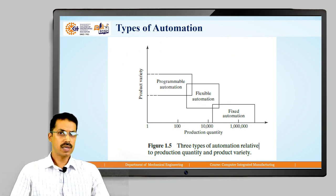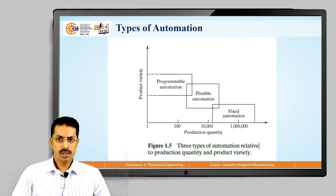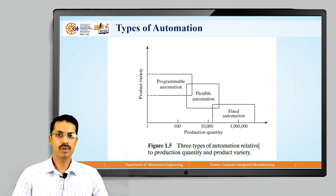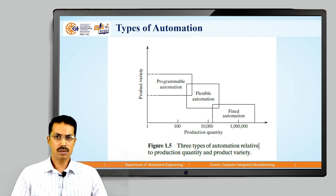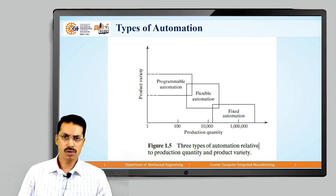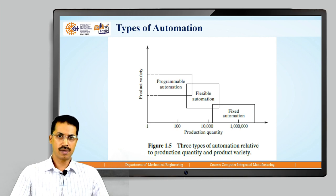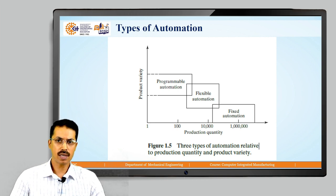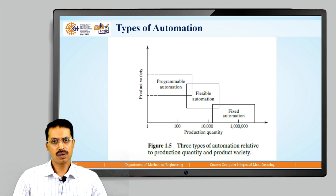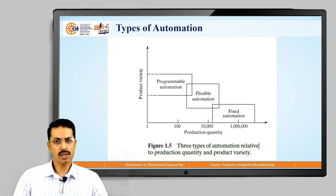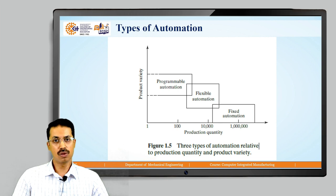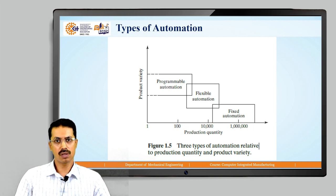There are three basic types of automation: fixed automation, flexible automation, and programmable automation. These three types are decided on the basis of product quantity and product variety. On this graph, the x-axis shows product quantity and the y-axis shows product variety. If product variety is low and production quantity is also minimum — both at minimum level — then we go for manual manufacturing, not automation.